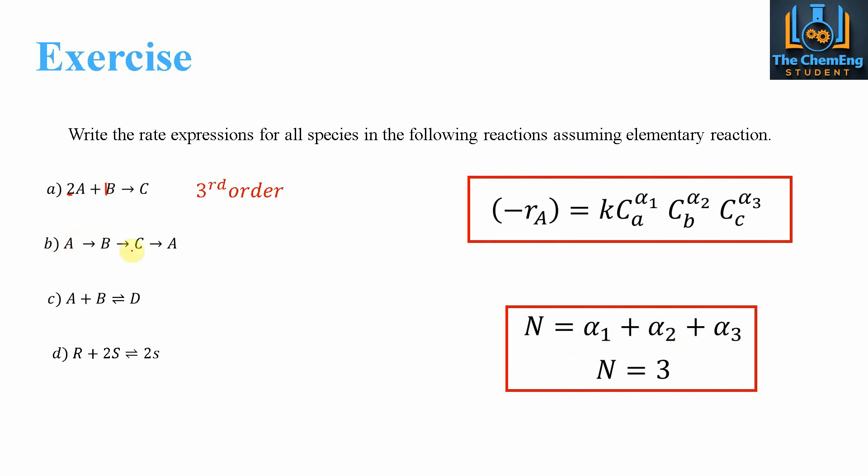For part B, this one is quite tricky because we have A → B, B → C, and C → A, like a round trip. Therefore, the overall order of the reaction is just first order because we take just A as the initial reactant. Although A is a product, this is the initial reactant with a stoichiometric coefficient of one.